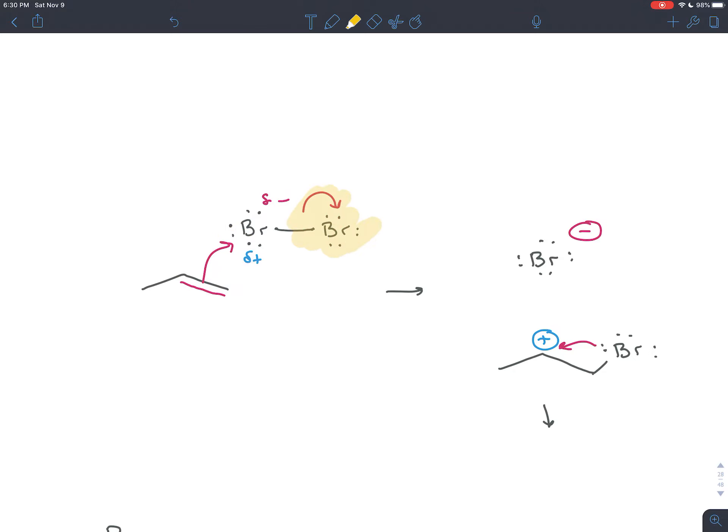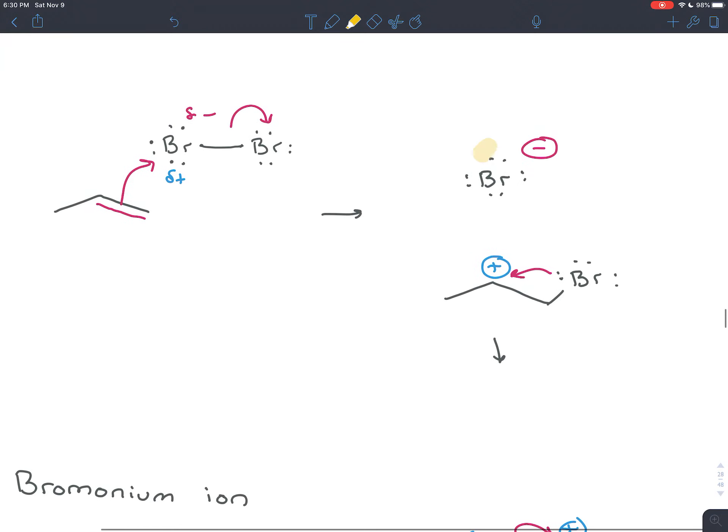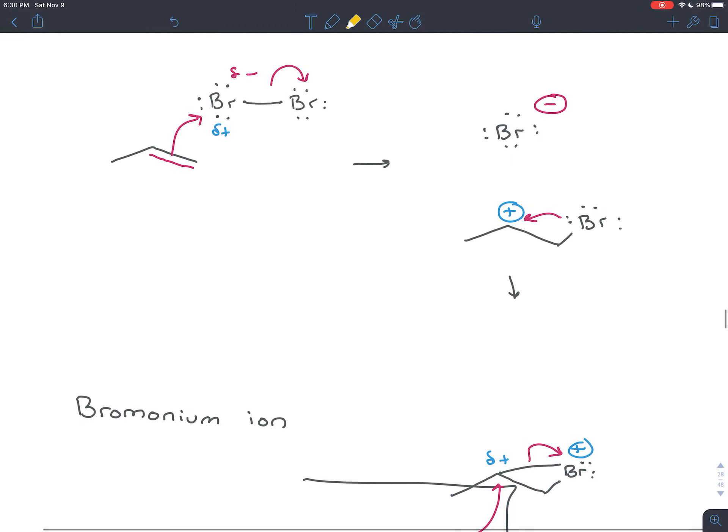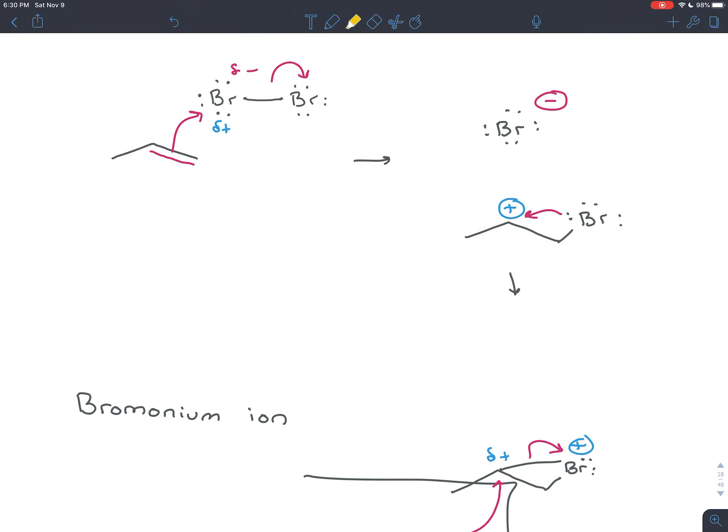The other bromine leaves as a leaving group and so you end up with two things. You end up with a bromide ion that was this bromine leaving group and then you end up with a carbocation that has a bromine on it. We talked in the previous example in halogenation about how just like with the mercurinium ion in oxymercuration-demercuration, right after the mercury adds to the double bond, it goes to the less substituted carbon and the carbocation forms at the more substituted carbon, but the mercury had a lone pair.